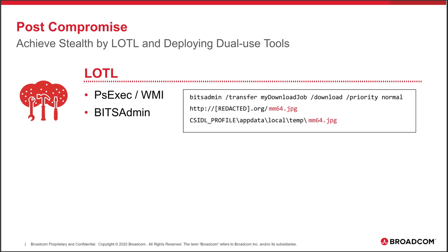Post-compromise, Stonefly uses two types of tools primarily to maintain stealth. The first are living-off-the-land tools — tools already present in an organization's environment, most likely used by IT administrators, such as PSExec and WMI. Stonefly uses these to probe and discover network assets and to move laterally, pushing their custom malware across machines within the organization. They also use tools like bitsadmin — for example, using bitsadmin to download what looks like a JPEG but is actually a Mimikatz credential-dumping hacking tool.